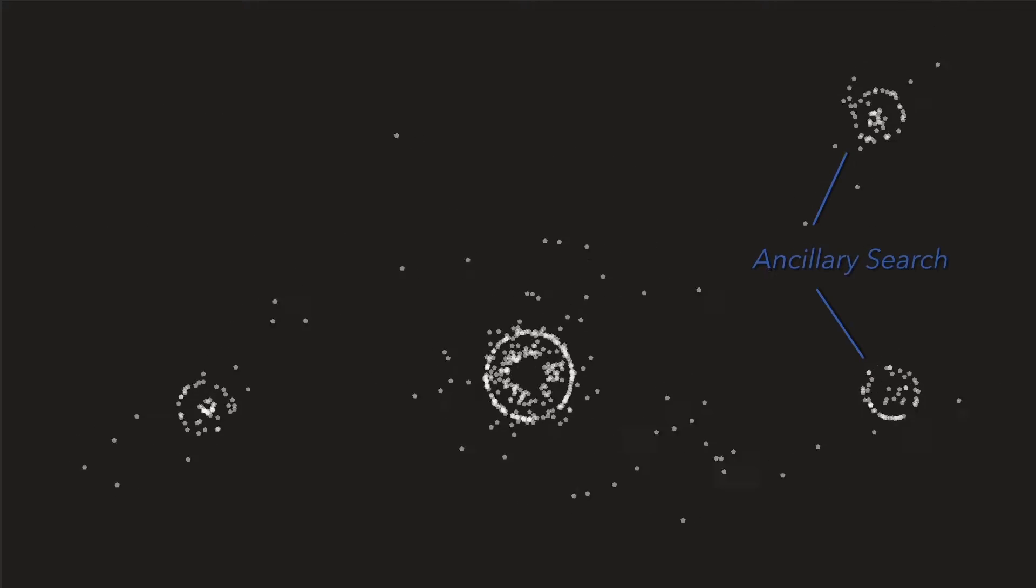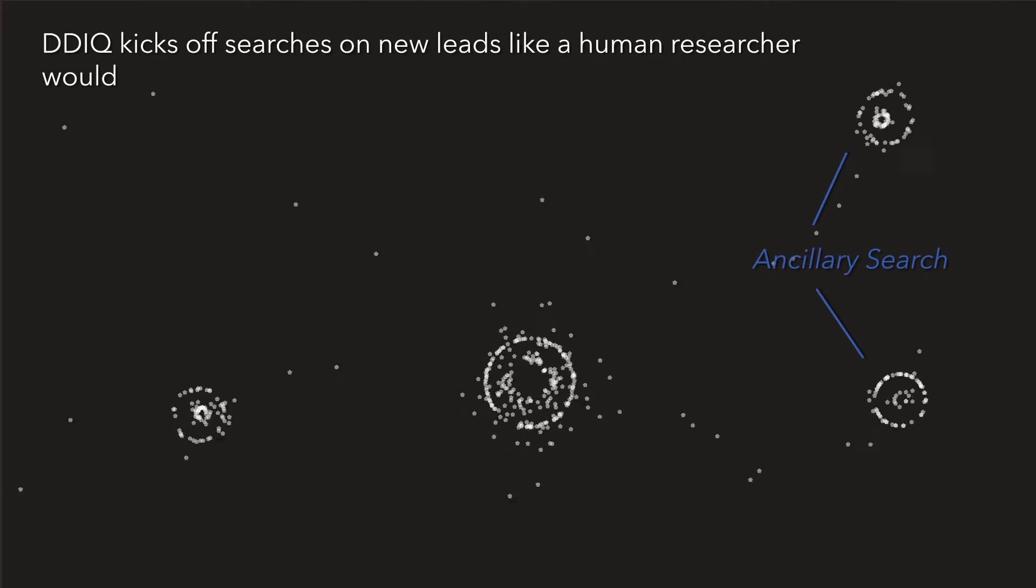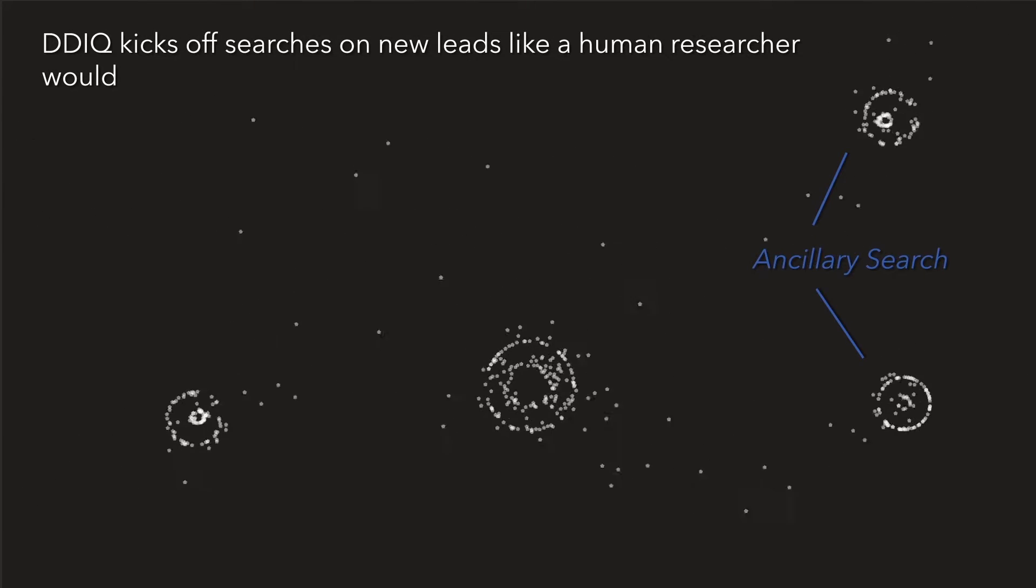DDIQ may also find information ancillary to the core search. The system kicks off searches on these leads, just like a human researcher would, to see if they can provide a richer understanding of the subject.